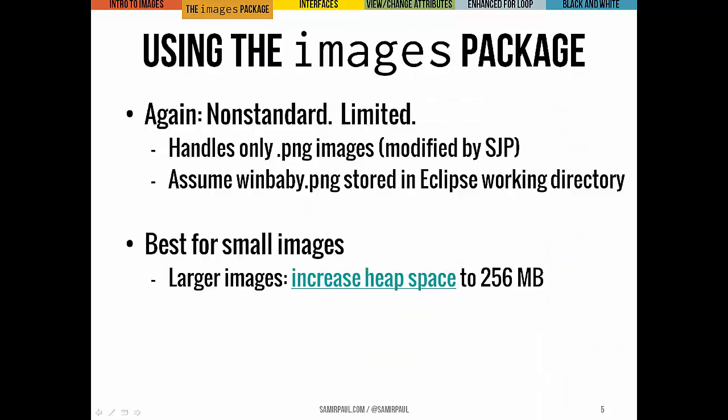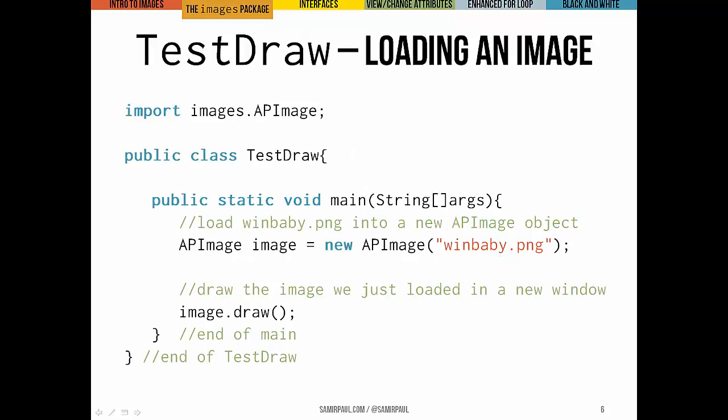Before we do any more complex algorithms, let's try out the Images Package and make sure we understand at a basic level how it works. This version of the Images Package only accepts .png files — that's using a modification I made to it, the purpose being that we want lossless compression. Any images you want to work with are assumed to be stored in the working directory of your Eclipse project, which means at the same level as SRC. Now let's look at a simple program. We have our import statement at the top importing the APImage class from the Images package. We could also do import images.star to get everything in the Images package.